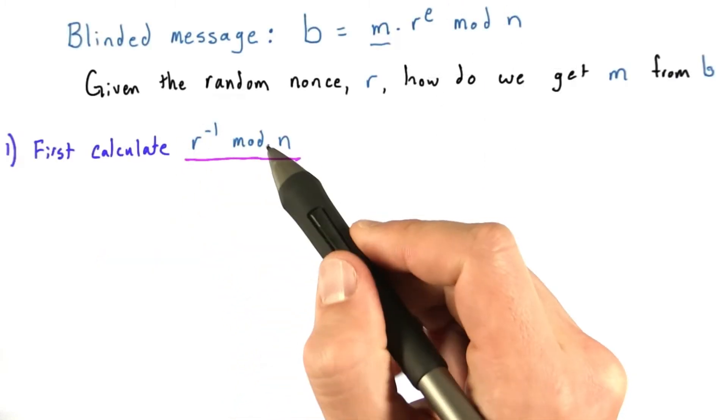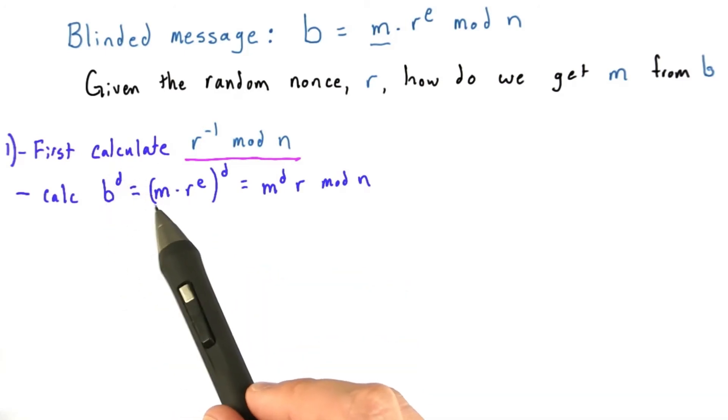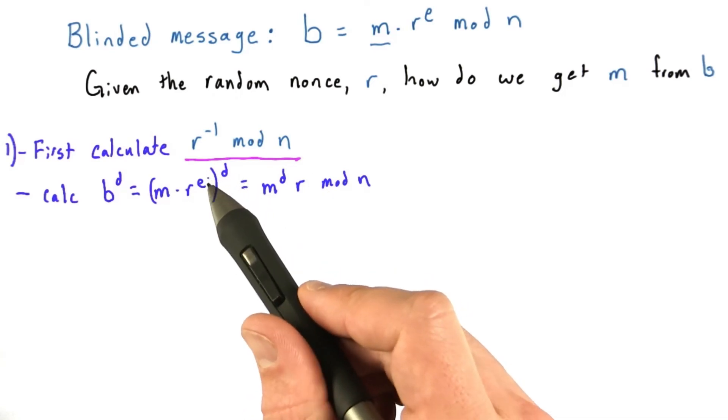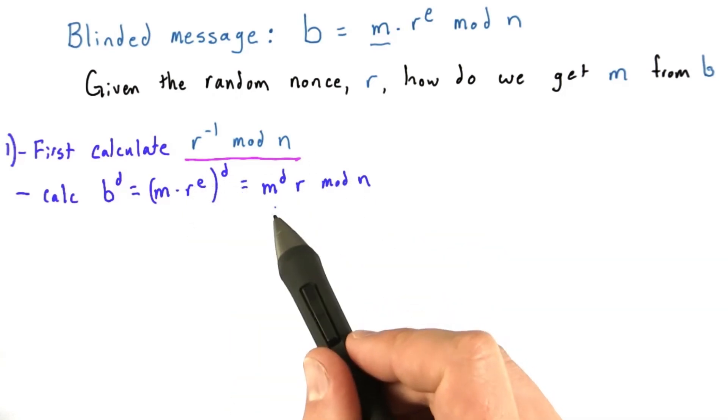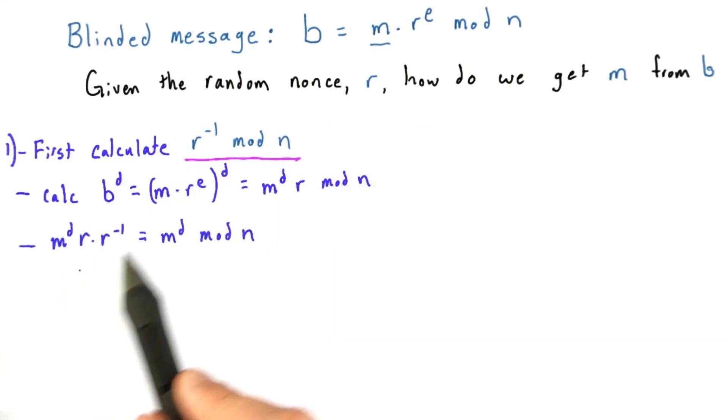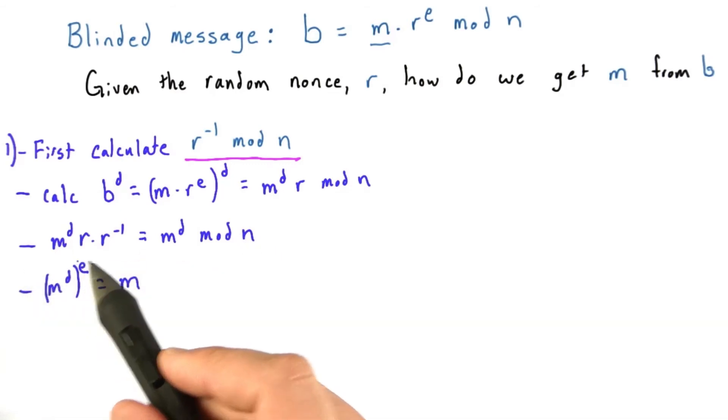So, now that we have the inverse of r mod n, we can calculate our blinded message. We should calculate b to the power d, which equals m times r^e to the power d. And since e and d are the public and private keys of RSA encryption, we get m to the power d times r mod n. If we multiply by the inverse of r, we get m^d mod n. And if we apply the public exponent, we can get m.